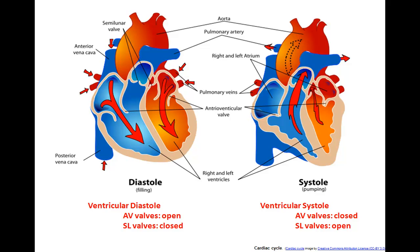During ventricular systole, the part of the cardiac cycle when the ventricles are contracting, they pump blood into the pulmonary trunk and the aorta. The semilunar valves — the pulmonary and the aortic — need to be open. Because the pressure of blood is so great in the ventricles, backflow into the atria needs to be blocked. Therefore, the AV valves — the tricuspid and the bicuspid — close, blocking backflow from the ventricles up into the atria.